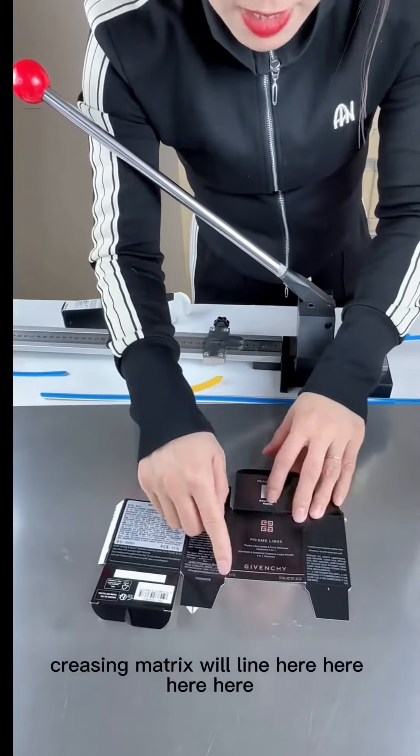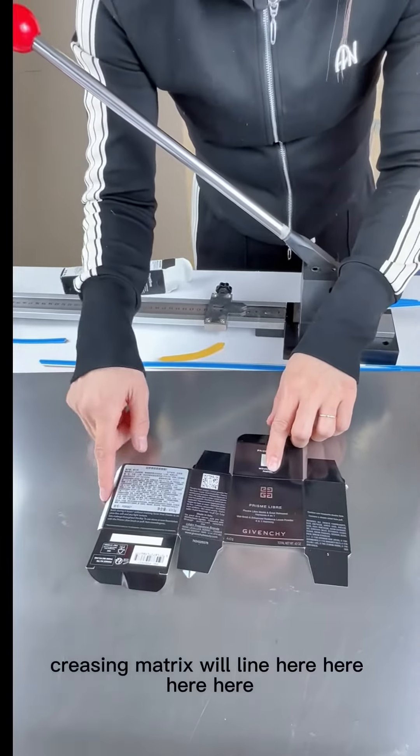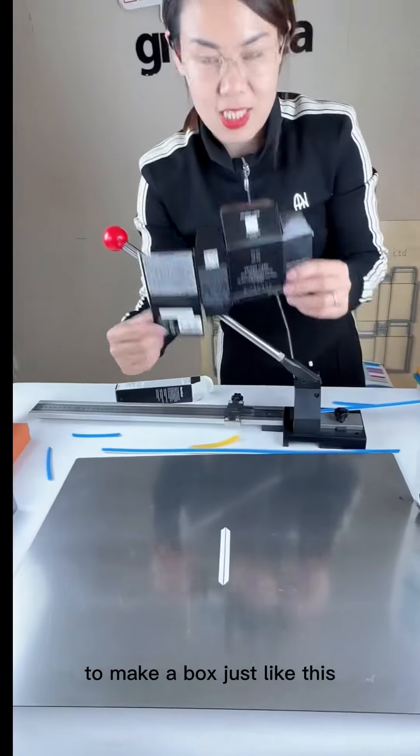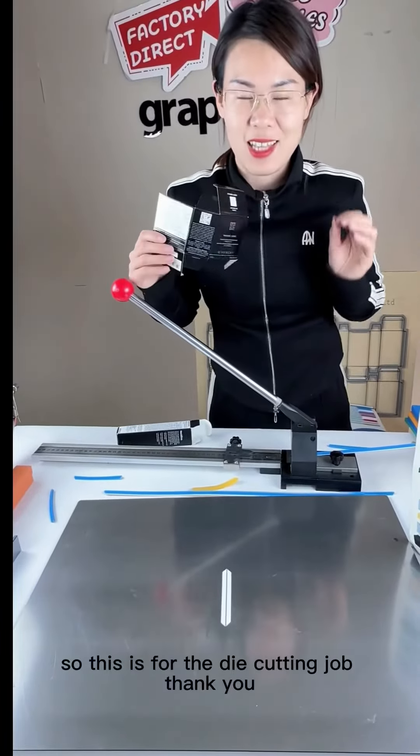So crazy line, crazy matrix will lie here, here, here, here to make a box just like this. This is for the die cutting job.